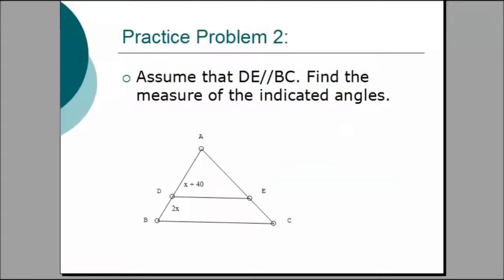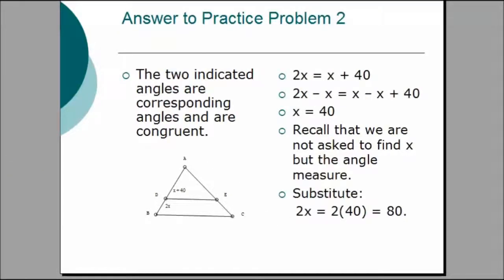In practice problem 2, assume that segment DE is parallel to segment BC. Find the measure of the indicated angles. The two indicated angles are corresponding angles and are congruent. Setting them equal: 2x equals x plus 40. Subtracting x from both sides gives x equals 40. To find the angle measure, substitute into the easier expression: 2x equals 2 times 40, which equals 80 degrees.